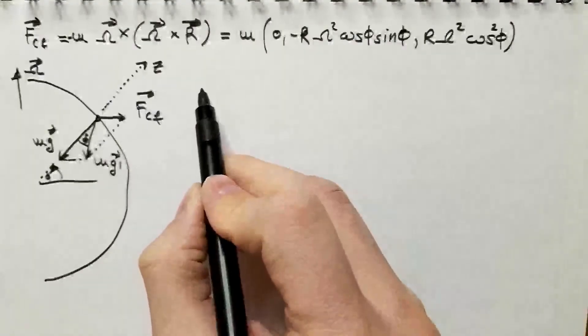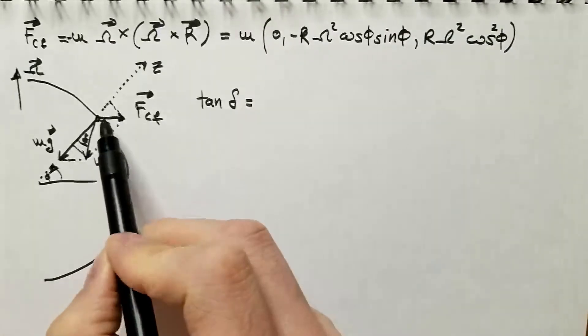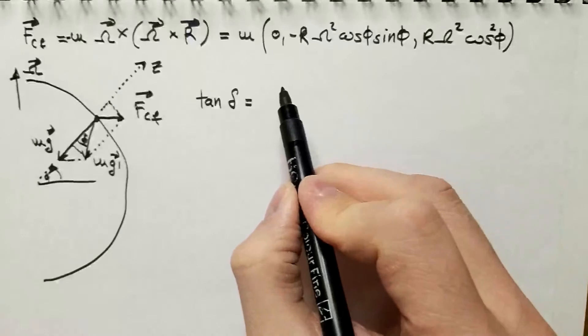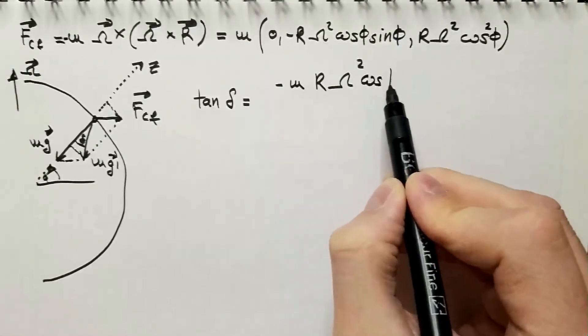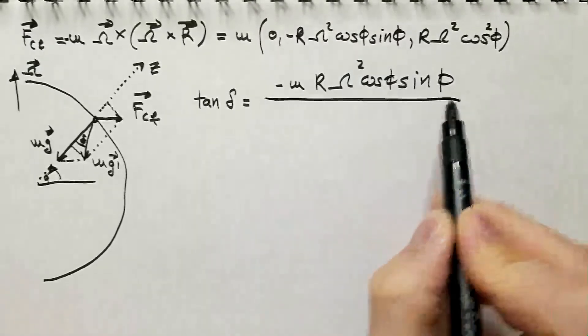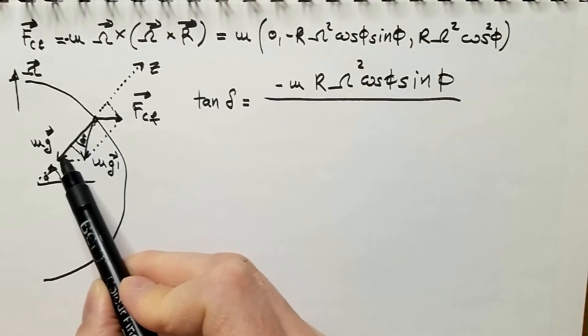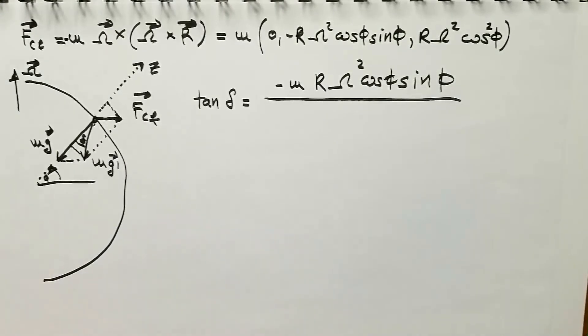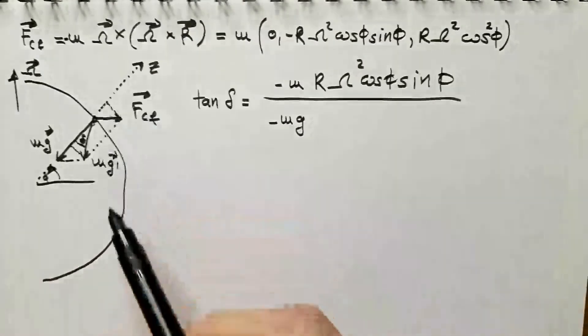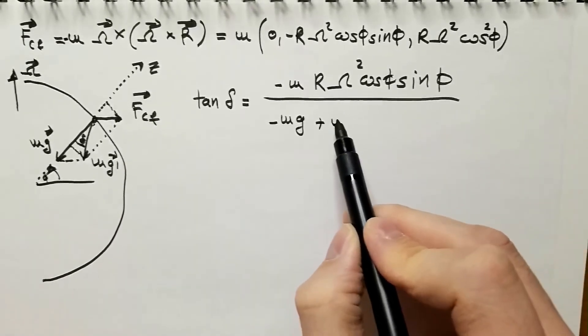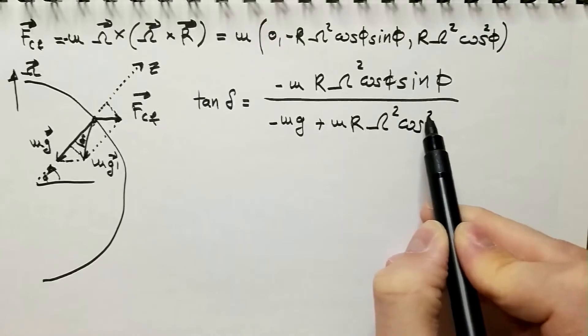Well, I will notice that tangent of this angle delta is the opposite side, which is, as you can see, the meridional component of my centrifugal force, which is minus m R omega squared cosine phi sine phi, divided by the adjacent side. And what is adjacent side? Well, it's the vector mg minus this portion over here, and this portion over here is the vertical component of the centrifugal force, so I get that this is minus mg, minus because it is acting in the negative direction of positive z-axis, and plus m vertical component, r omega squared cosine squared phi.